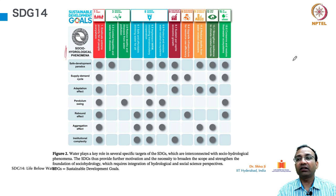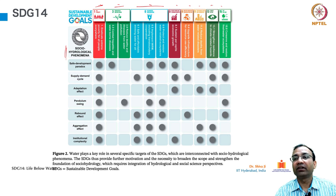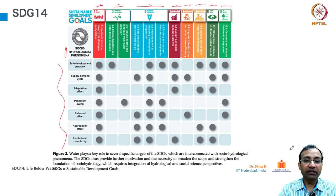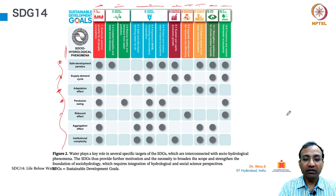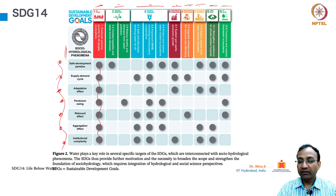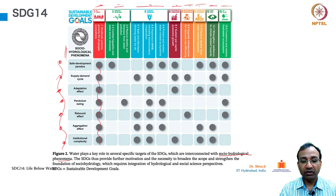Socio-hydrological phenomena are related to some of these SDGs: no poverty, good health, clean water and sanitation, decent work and infrastructure, city development, climate action and life on land. Water plays a key role in several specific targets of the SDGs which are interconnected with socio-hydrological phenomena. The SDGs thus provide further motivation and necessity to broaden the scope and strengthen the foundation of socio-hydrology, which requires integration of hydrological and social science perspectives.